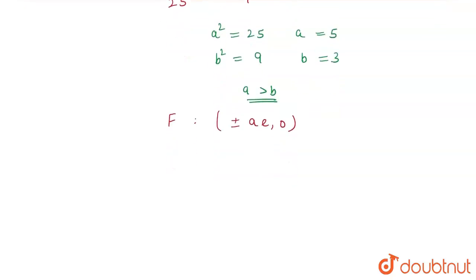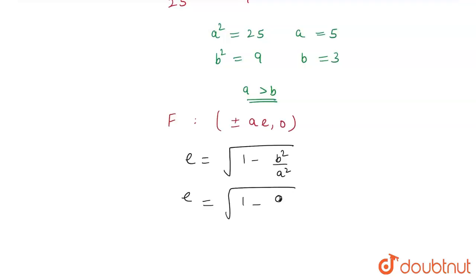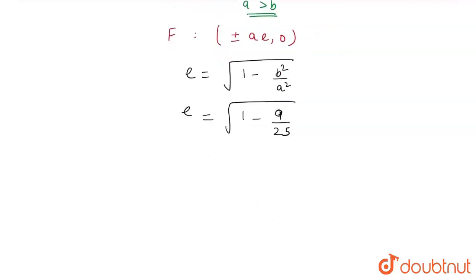The eccentricity e = √(1 − b²/a²). Therefore, e = √(1 − 9/25) = √(16/25) = 4/5. So I have the value of eccentricity, which is 4/5.